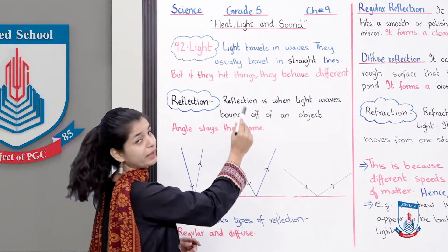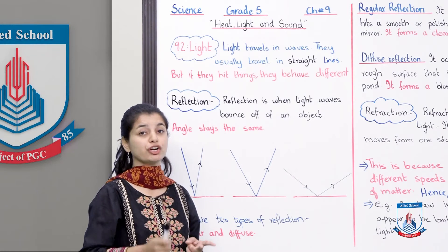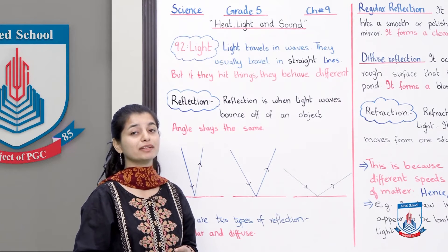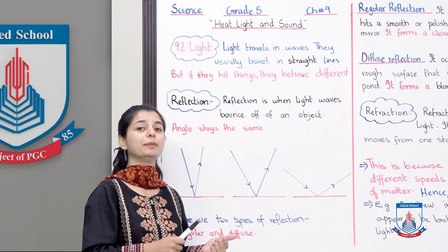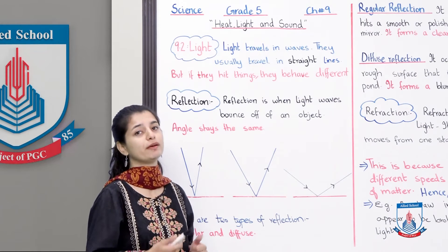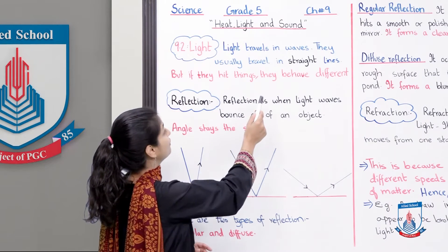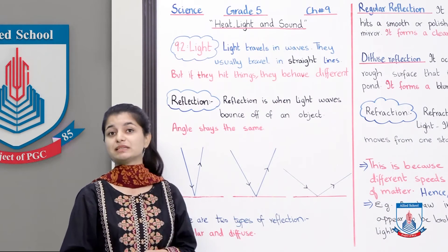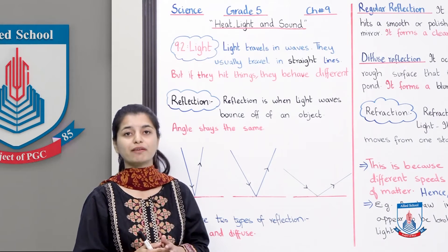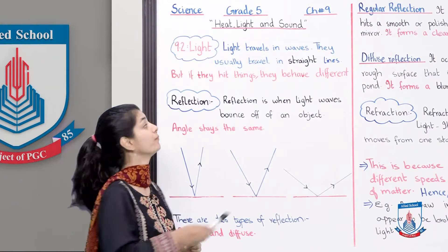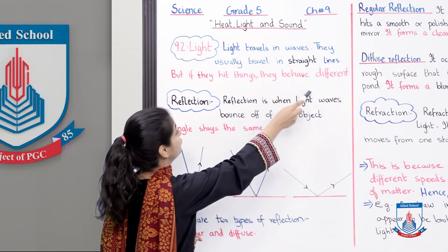Light travels in waves. We have talked about sound energy and heat energy and the medium of waves. Here we also say that light travels in waves. They usually travel in straight lines, unless they hit things — then they behave differently.